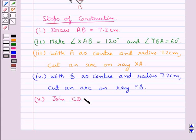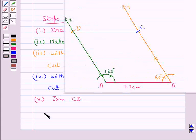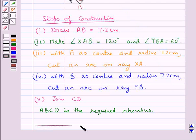We join CD. Now we have joined CD. So this ABCD is the required rhombus. This completes the session. Hope you have understood the solution for this question.